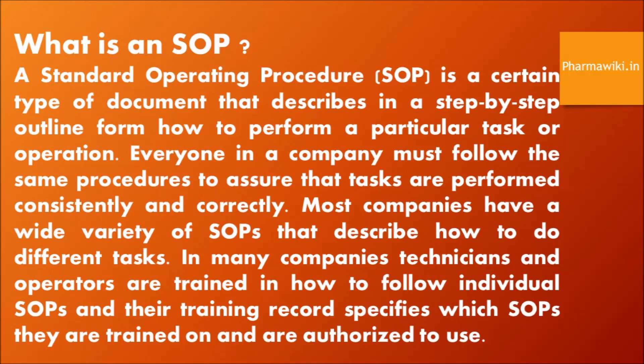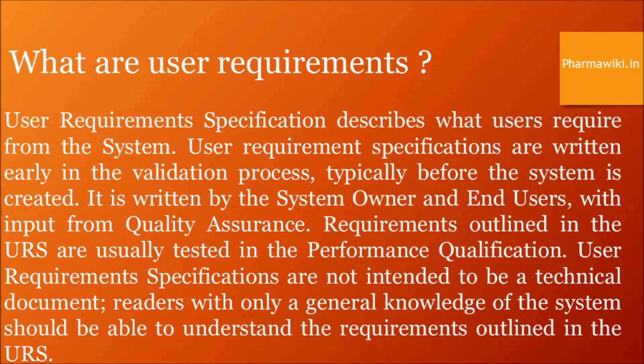What are user requirements? User requirements specifications are written early in the validation process, typically before the system is created. They are written by the system owner and end users, with input from quality assurance. Requirements outlined in the URS are usually tested in the performance qualification. User requirements specifications are not intended to be a technical document — readers with only a general knowledge of the system should be able to understand the requirements outlined in the URS.